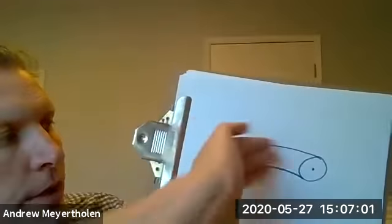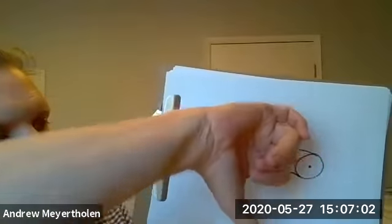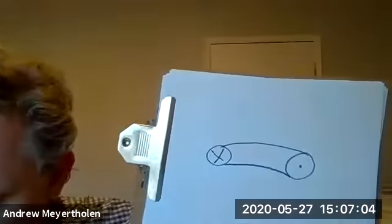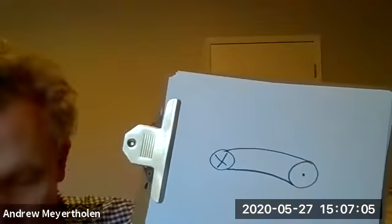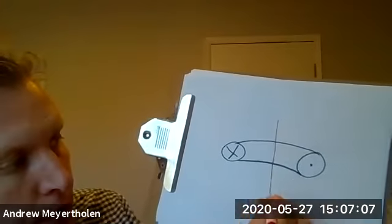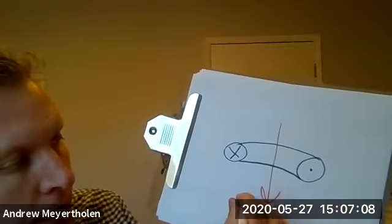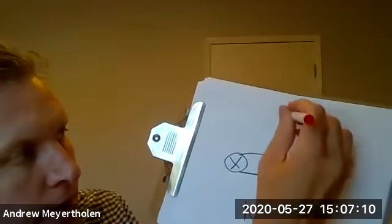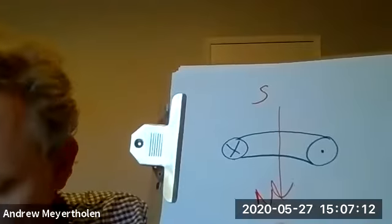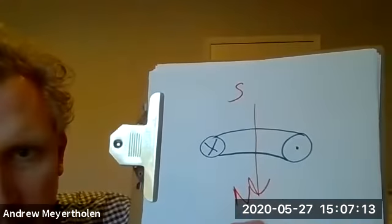and they would sort of curl around the back side and come out here, and your thumb points this way. And so that would mean our magnetic field is pointing this way, which would imply that the north side is here, and that the south side is here.